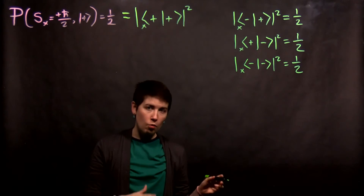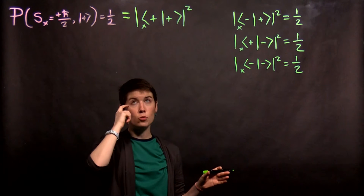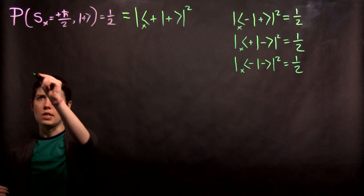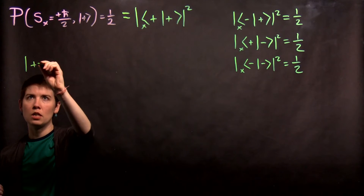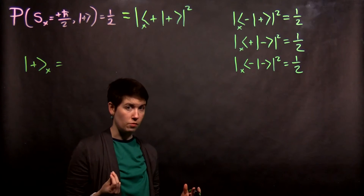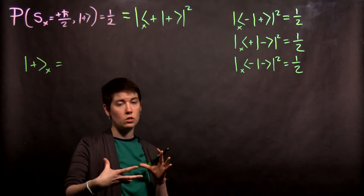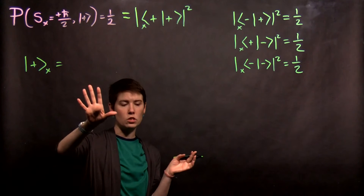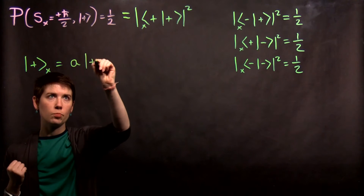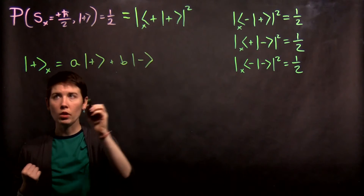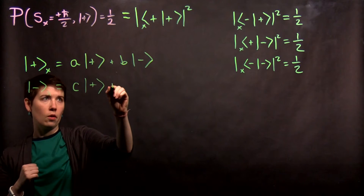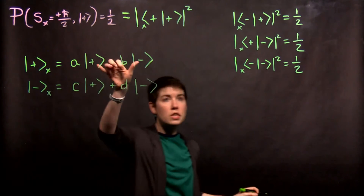What we need to do is express our measurements in the x direction as states expressed in the z basis, and we're going to write these as ket states. So when we say spin up in the x direction, we're going to write this as a sum of our basis vectors with complex coefficients. Our basis vectors in this vector space are the z spin up and spin down vectors, and the coefficients need to be complex. So I'll write this as a spin-up plus b spin-down, and spin down in x as c spin-up plus d spin-down.